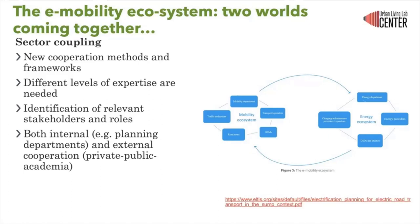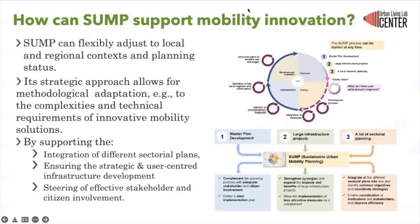When we look at e-mobility within the context of a sustainable urban mobility plan, we need to be aware that new cooperation methods and frameworks are required. Different levels of expertise are needed, and we must identify relevant stakeholders and roles, working together with internal departments such as planning departments and through private-public partnerships and academic research.